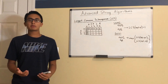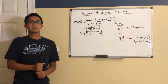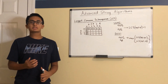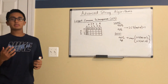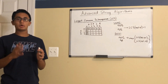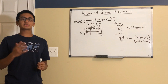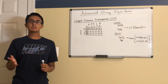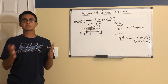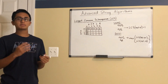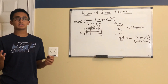The first dynamic programming problem we will look at is the longest common subsequence. The longest common subsequence problem asks for the length of the longest subsequence that appears in both of two strings. The difference between a substring and a subsequence is that substrings have to be a consecutive set of characters in a string, whereas subsequences are not necessarily consecutive.